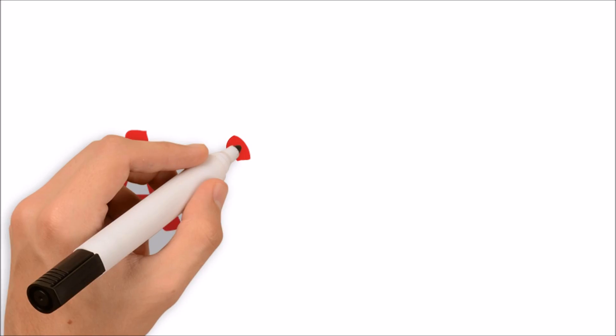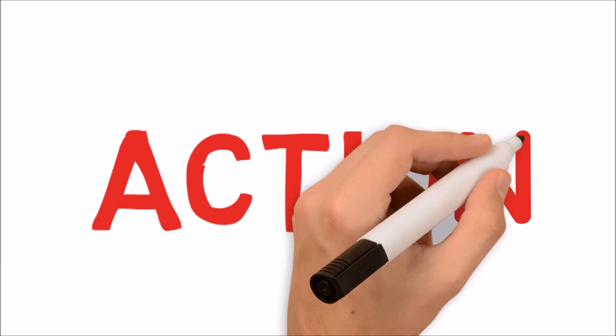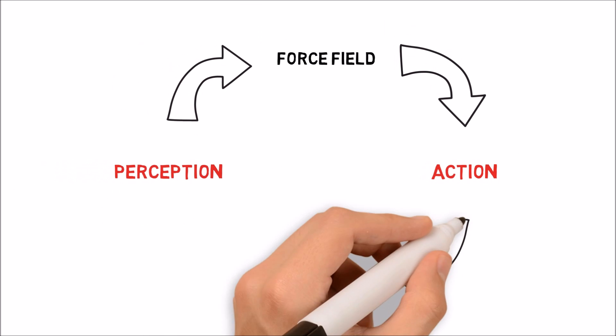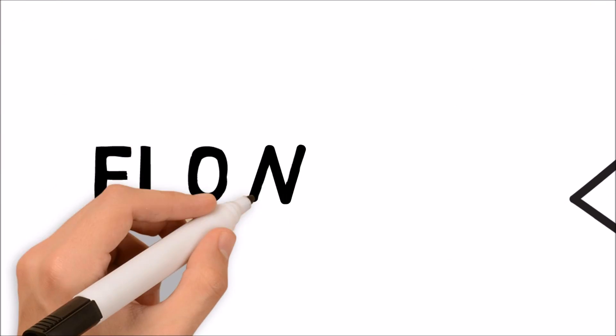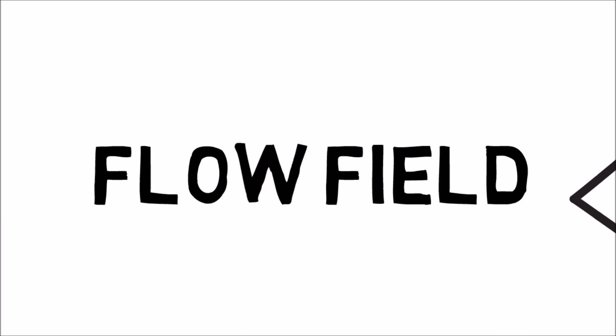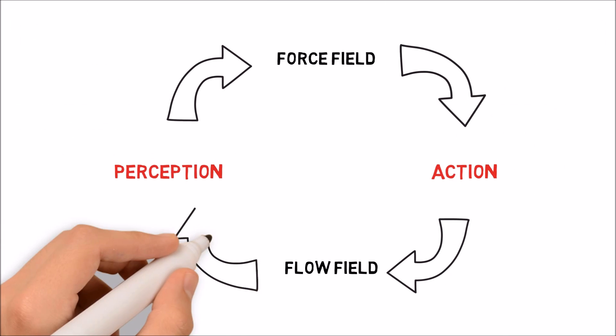We then perform an action. As a consequence of such action, changes occur in the flow field. In the case of visual perception, this is a different optic array or field of vision.